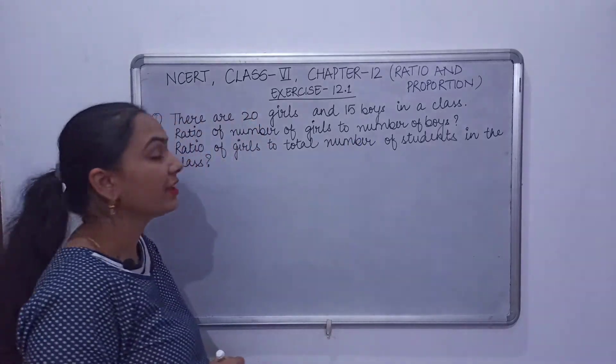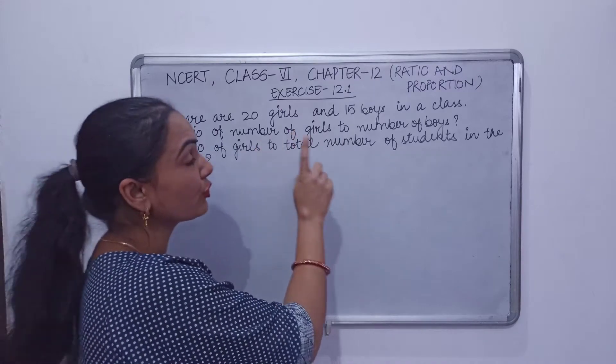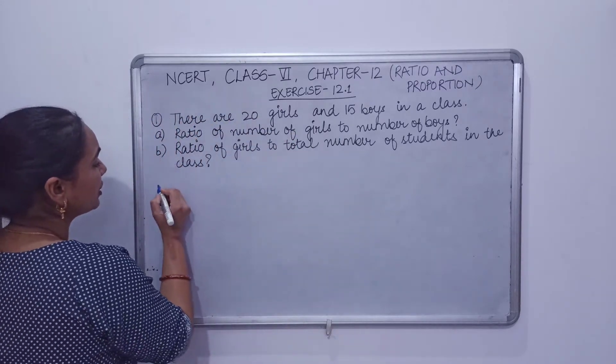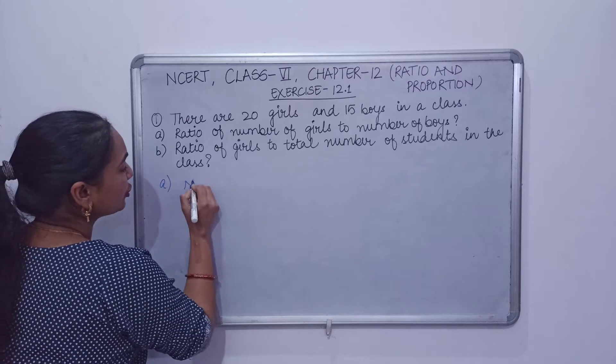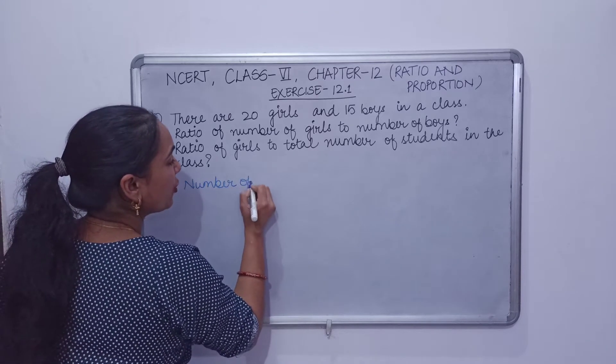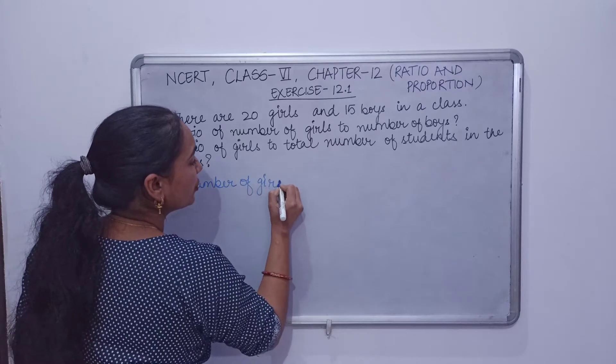What do we need to find? Ratio of number of girls to number of boys. So first of all, we will see number of girls.